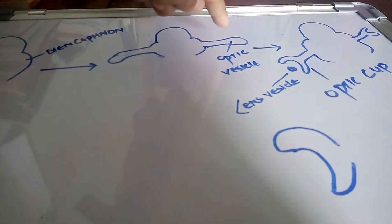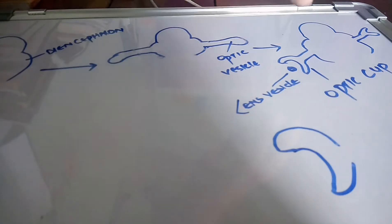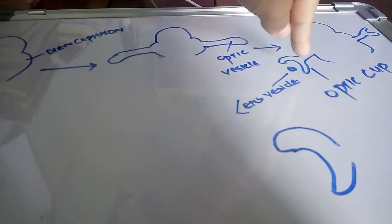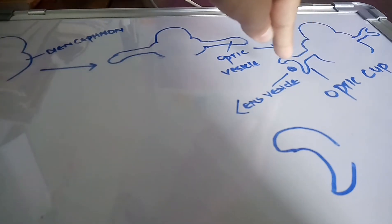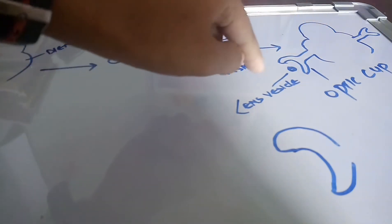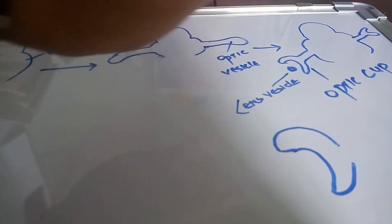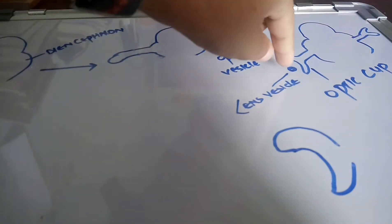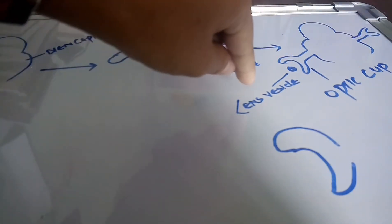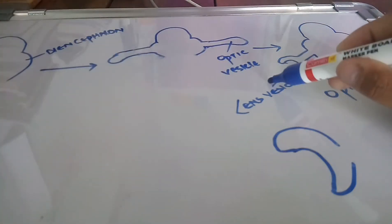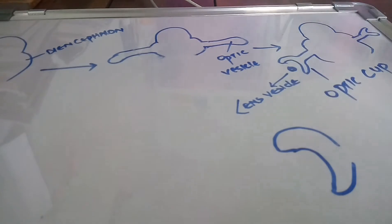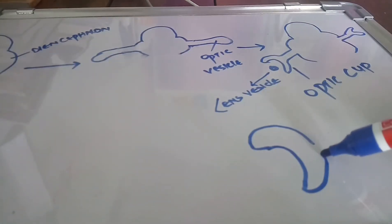From the optic vesicles, the optic cup develops. When it invaginates anteriorly, it pushes more and more and develops into an optic cup, along with the lens vesicles.